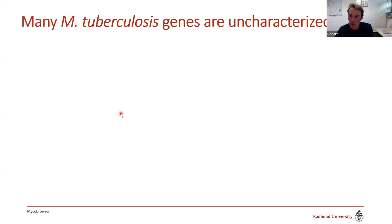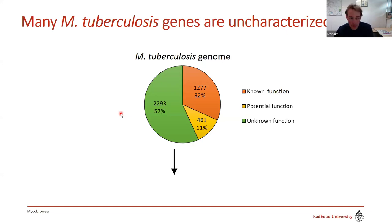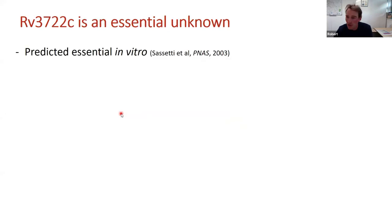In our lab we focus on Mycobacterium tuberculosis, the bacterium that causes TB — a disease that still kills over a million people every year. This pie chart of the MTB genome shows that almost two-thirds of the genes have no known function, ranging from completely unknown to somewhat unknown. We reasoned that among these unknown proteins there's lots of new biology, and that this new biology could lead to new drug targets.